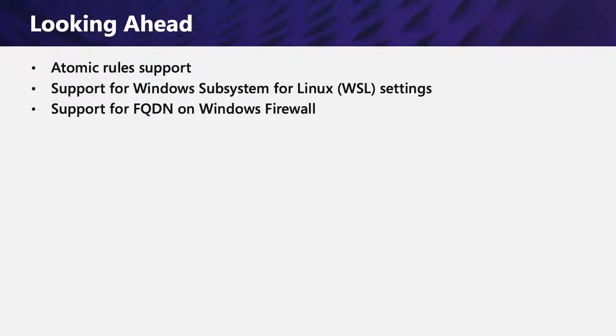Looking ahead, we have improvements on the way that firewall rules apply to endpoint devices to ensure they are consistent and you know the state of the endpoint at all times. We're enhancing the way policies apply to the endpoint with atomic rule support, adding support for Windows Subsystem for Linux settings, and continuing to work on bringing the FQDN feature in Windows Firewall to general availability. I appreciate the time you spent with me today learning about Windows Firewall.